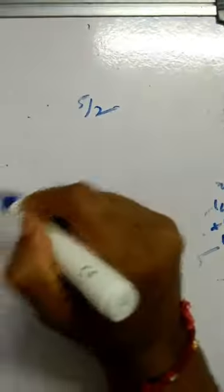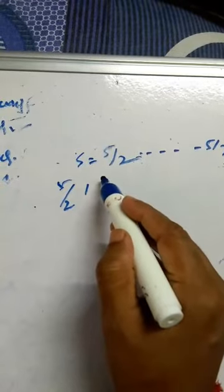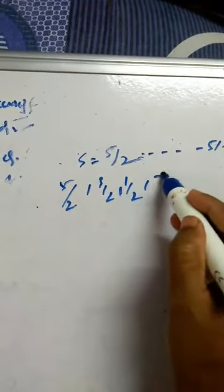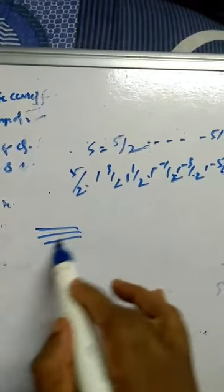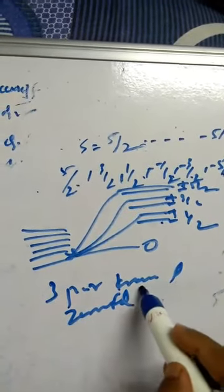For S = 5/2, the ms values are +5/2, +3/2, +1/2, −1/2, −3/2, −5/2 — six levels. At zero field, these split into three Kramers' pairs: ±5/2, ±3/2, and ±1/2. So three pairs of Kramers' degeneracy are obtained at zero field. This is called the Kramers' degeneracy or zero field splitting effect.